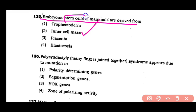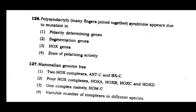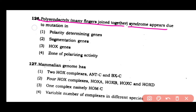Embryonic stem cells of mammals are derived from the inner cell mass. Question number 126: Polysyndactyly — many fingers joined together syndrome — appears due to mutation in — (1) polarity determining genes, (2) segmentation genes, (3) Hox genes, (4) zone of polarizing activity. The correct answer is option 3. Polysyndactyly occurs due to mutation in Hox genes.